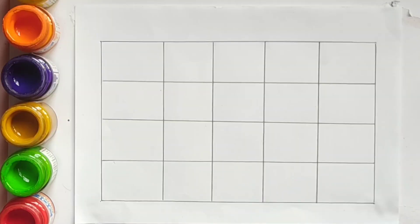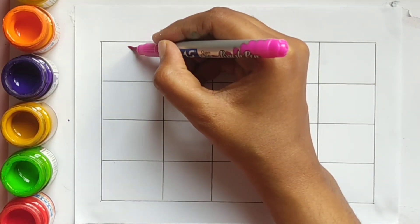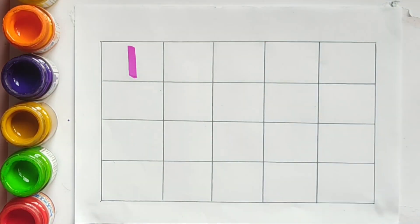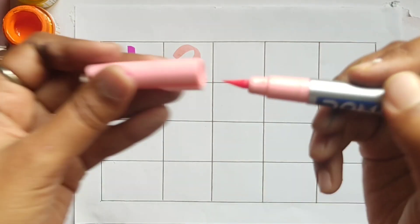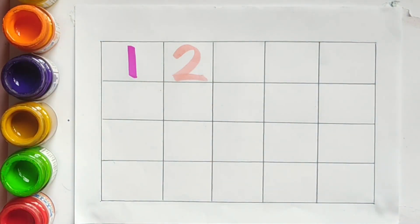Today we will learn counting. One. One. Light pink color. Two. Light pink color. Two.